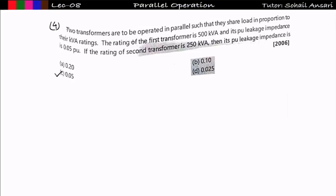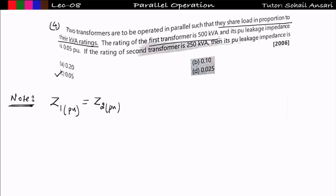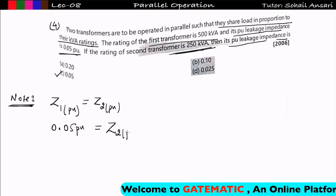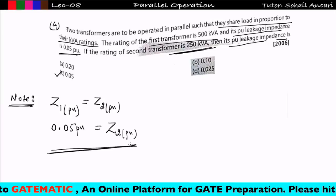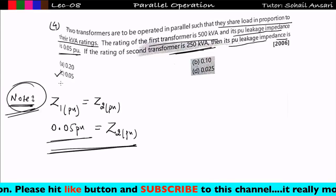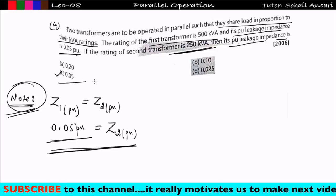The next problem asks: for two transformers operating in parallel to share load in proportion to their kVA ratings, what condition must hold? As explained in the previous lecture, the per-unit impedance of both transformers on their respective bases must be equal. Transformer 1 is rated 500 kVA with per-unit leakage impedance Z1_pu = 0.05 pu. Transformer 2 is rated 250 kVA. For proportional load sharing, Z2_pu must also equal 0.05 pu on its own 250 kVA base.